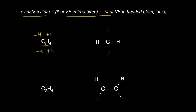Let's go ahead and verify that with our dot structure. When calculating the oxidation state using dot structures, we're thinking about bonding electrons, and each bond consists of two electrons, so we put in the bonding electrons for all of our bonds. We think about the oxidation state for carbon by starting with the number of valence electrons in the free atom — carbon is supposed to have four valence electrons.